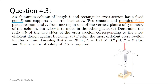Looking at the question, it asks us to determine the ratio of A to B based on the most efficient design against buckling. To answer this, we need to look at how the column bends.